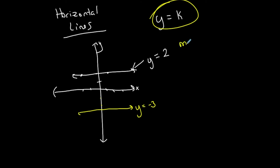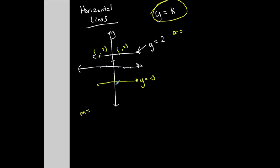Now let's talk about the slope of these lines. Notice that the y-coordinate — I don't care what the x-coordinate is — the y-coordinate on this line is always 2. So if I were to use the slope formula, remember it's change in y: the second y-coordinate minus the first y-coordinate, over whatever the x-values are. Notice that in the numerator of my slope formula, I'm always going to get 0 — always 0 over some number. It doesn't matter what the denominator is; 0 divided by something is 0.